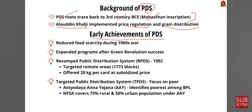The PDS was revamped in 1992, becoming more targeted by focusing on 1,773 targeted blocks, affording 20 kg of rice at subsidized prices. It was again revamped as Targeted Public Distribution System (TPDS), focusing on the poor with related schemes like Antyodaya Anna Yojana, identifying the poorest among the below poverty line people. The National Food Security Act of 2013 covers 75% of the rural poor and 50% of the urban population under Antyodaya Anna Yojana.